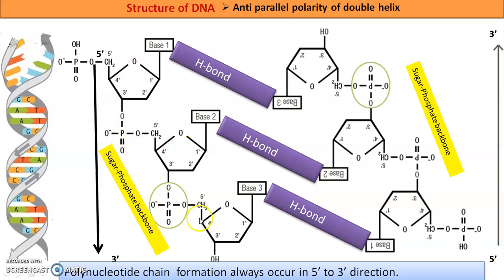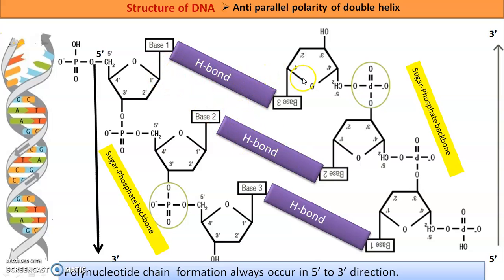The sugar-phosphate backbone repeats: sugar, phosphate, sugar, phosphate, and so on. Every time, the number of sugars and the number of phosphate groups will always be the same in a polynucleotide chain. The two sugar-phosphate backbones are connected by hydrogen bonds between their bases — the nucleotide bases are connected by hydrogen bonds — just like the rungs of a ladder where you stamp and climb up. These base hydrogen bonds give that rung-like shape to the ladder.